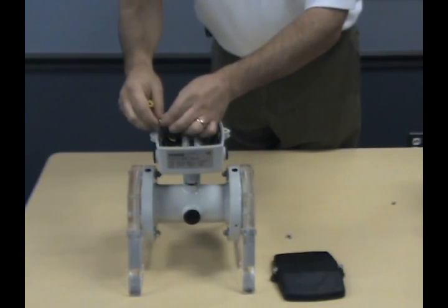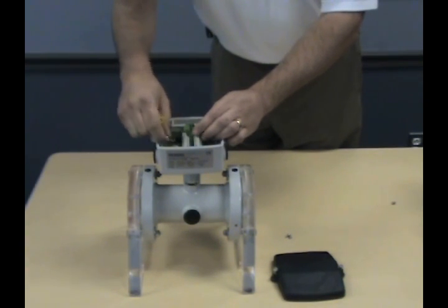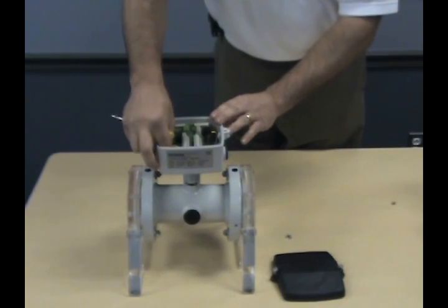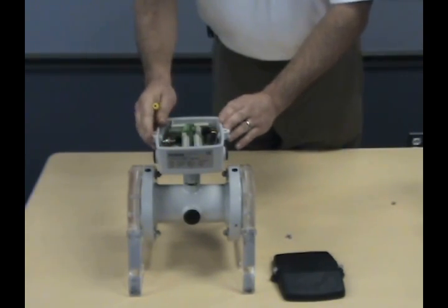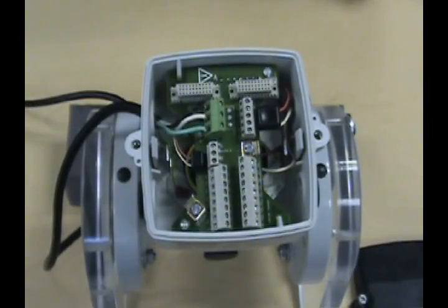Next, don't forget to attach the green ground wire to the threaded hole in the metal plate at the bottom of the terminal box. The wiring of the junction box is now complete.